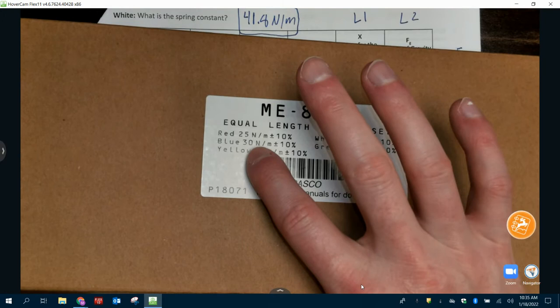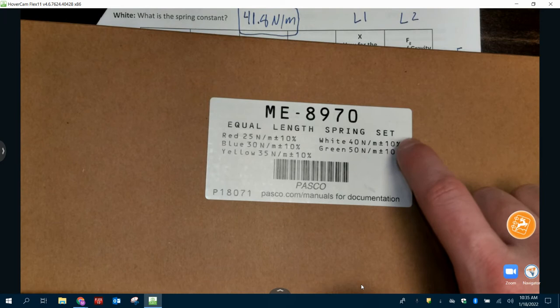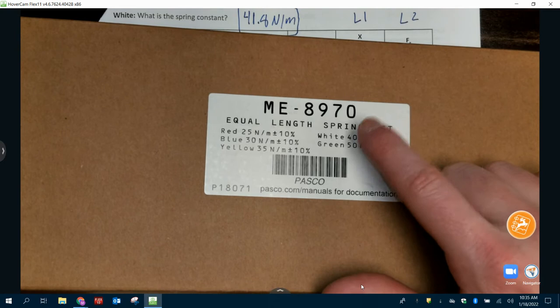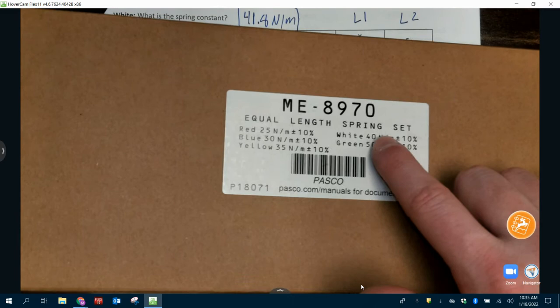Same thing. 30 plus or minus 10%. Yellow is 35. White is 40. So that means I should have been 44 to 36. And I'm definitely within that range. The closer you are to 40, the better. And then green is 50. So these are the numbers you want to be close to when you plug it in.